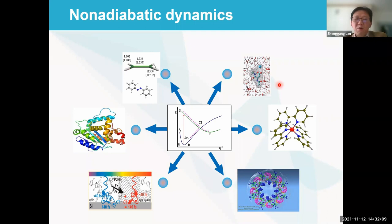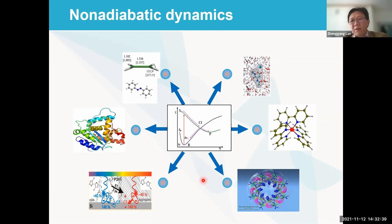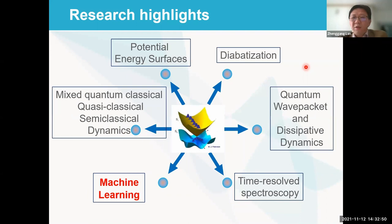Non-adiabatic dynamics is very important in many fields. This morning we also heard Professor Oleg give an excellent talk on non-adiabatic dynamics in another system. For smaller systems as well, non-adiabatic dynamics widely exists, ranging from very small systems to aromatic systems in solution to transition metal complexes, organic photovoltaic systems, and biological systems — potential energy surface crossings are everywhere. This is why non-adiabatic dynamics is very important for photophysics and photochemistry.